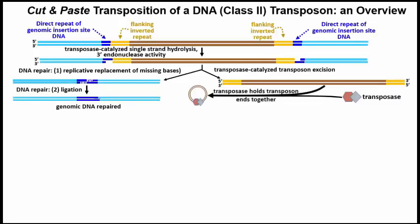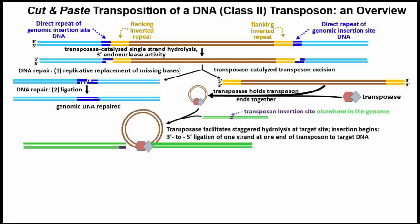Transposase, in the meantime, binds the cut ends of the transposon, causing it to form a circular structure shown here. In this configuration, the transposase can attack or cleave target DNA and ligate one strand of the target DNA to one end of the transposon, while at the same time trimming back the 3' end of the other target DNA strand.